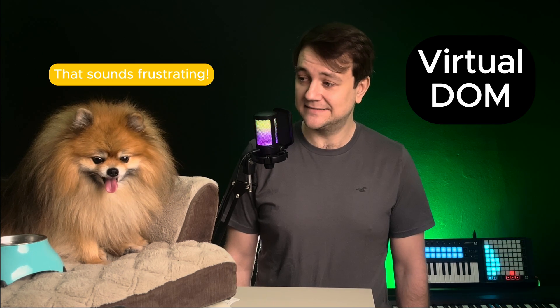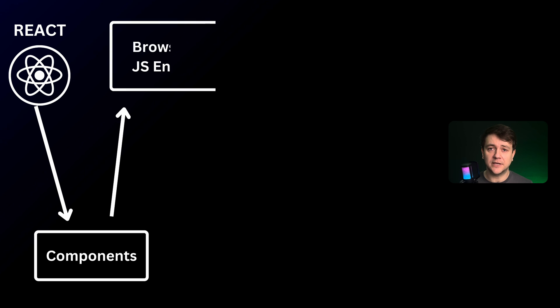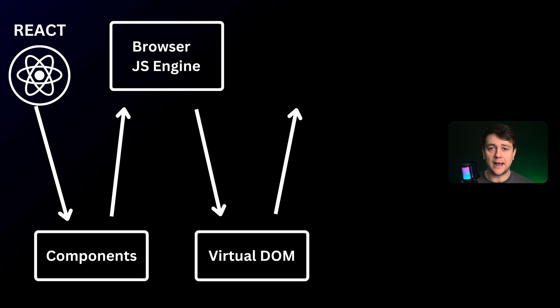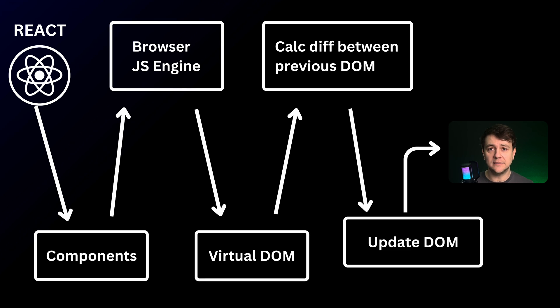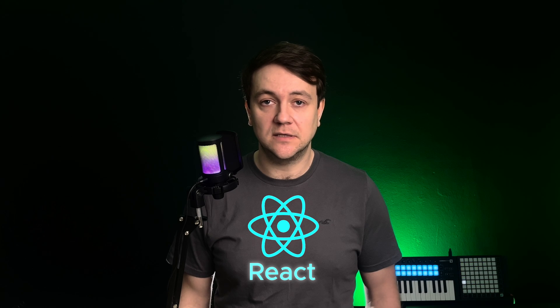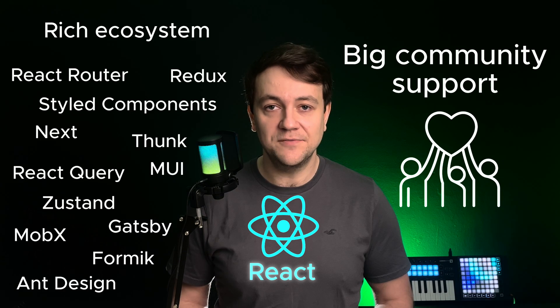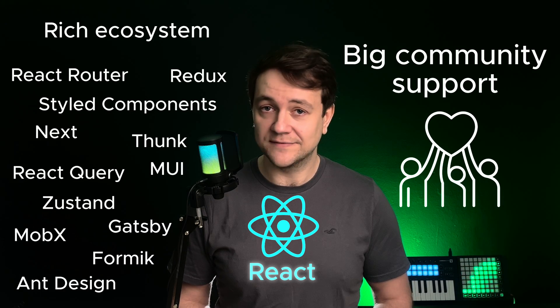That sounds frustrating! The virtual DOM is an in-memory representation of the actual DOM. React uses it to compute the changes needed to update the browser DOM. Originally it was groundbreaking as it minimized expensive DOM manipulations, but as web applications became more complex, the virtual DOM introduced overhead, and we had to start using tools like useMemo and useCallback to optimize performance. React's strength lies in its rich ecosystem and community support — I can find a React component, or even six, for any purpose I need.